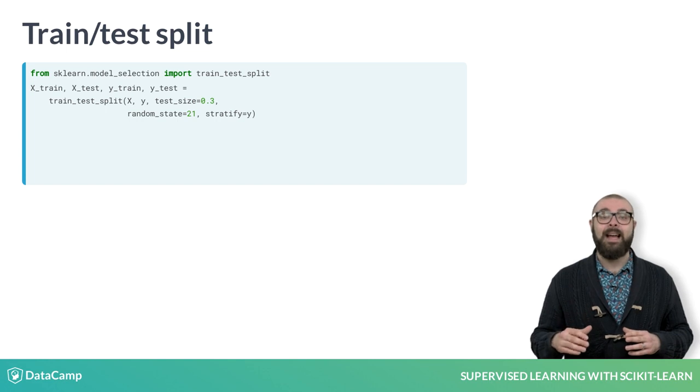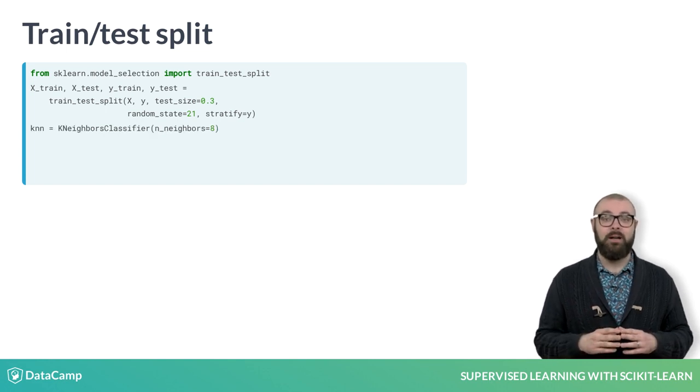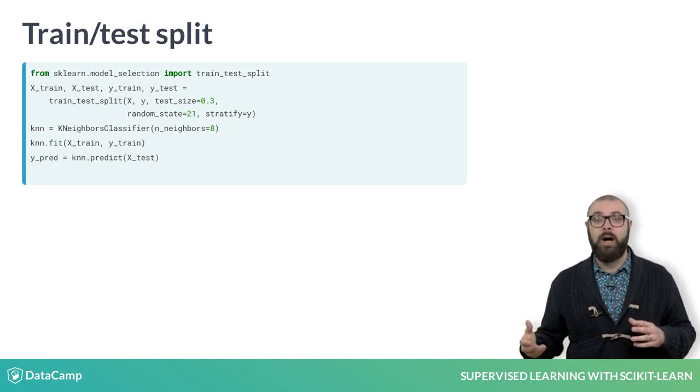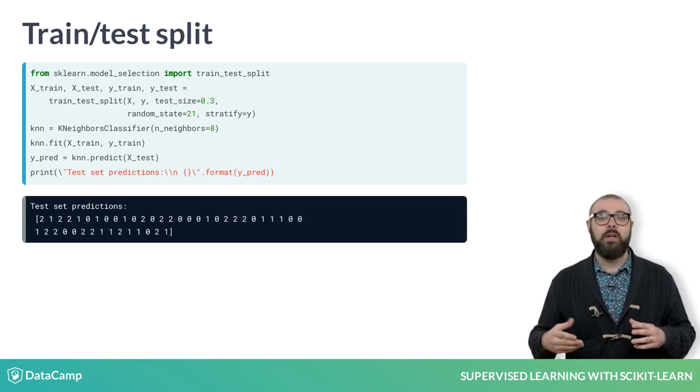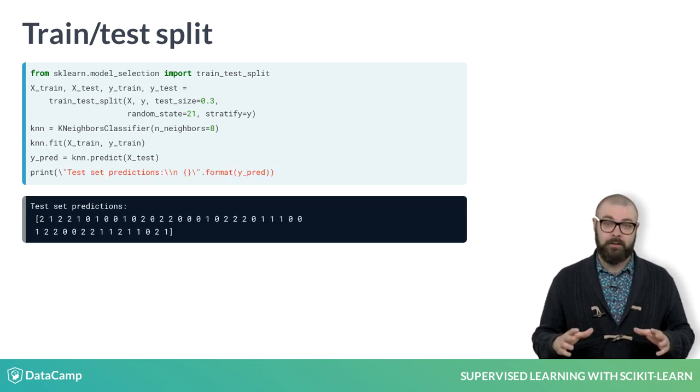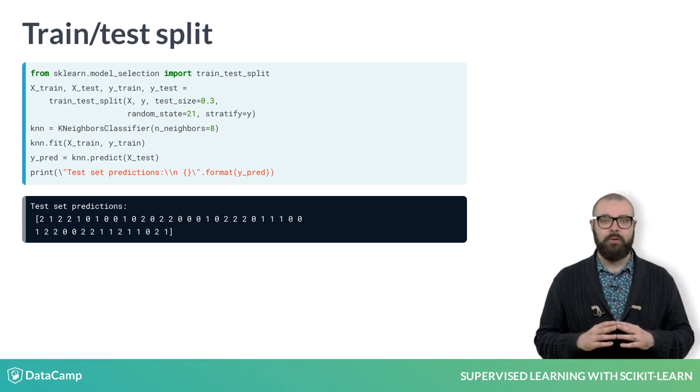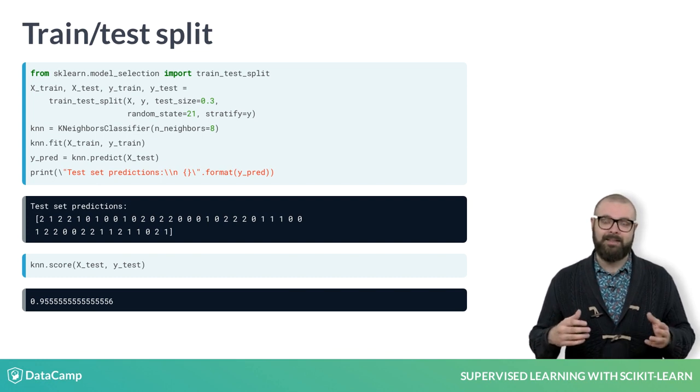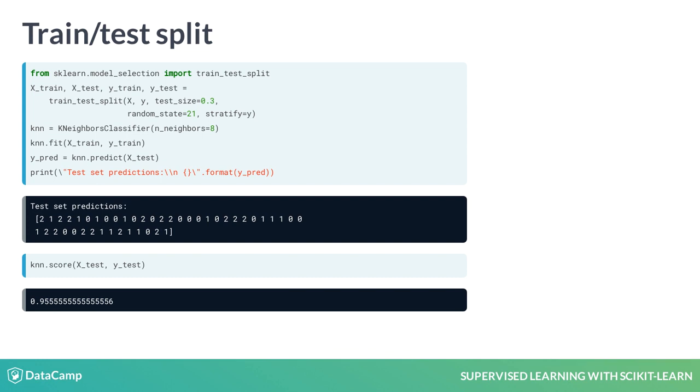We then instantiate our K nearest neighbors classifier, fit it to the training data using the fit method, make our predictions on the test data and store the results as y_pred. Printing them shows that the predictions take on three values as expected. To check out the accuracy of our model, we use the score method and pass it X_test and y_test. The accuracy of our K nearest neighbors model is approximately 95%, which is pretty good for an out of the box model.